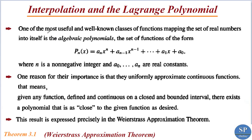One of the most useful and well-known classes of functions mapping the set of real numbers into itself is algebraic polynomials. An algebraic polynomial is of the form p_n(x) = a_n x^n + a_{n-1} x^{n-1} + ... + a_2 x^2 + a_1 x + a_0, where n is a non-negative integer and the coefficients a_n, a_{n-1}, ..., a_1, a_0 are real constants.